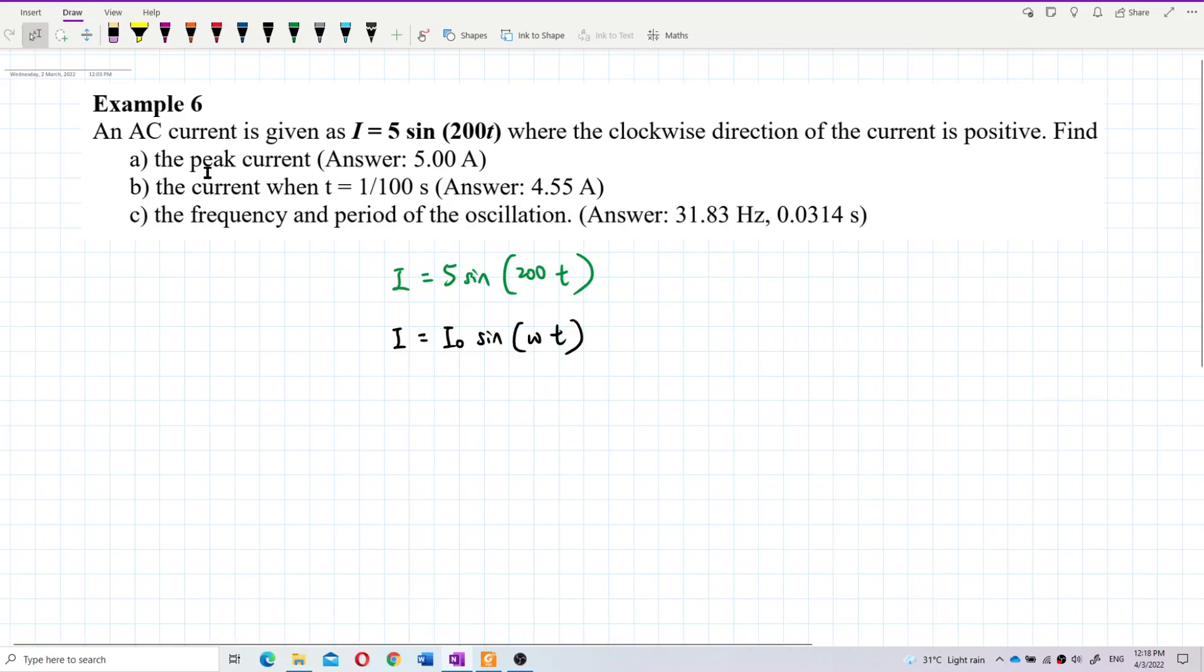What is the peak current? You can see here this 5 is I naught, this 200 is omega. So the peak current, I naught, is 5. He didn't mention what unit, so it's just 5 amperes.